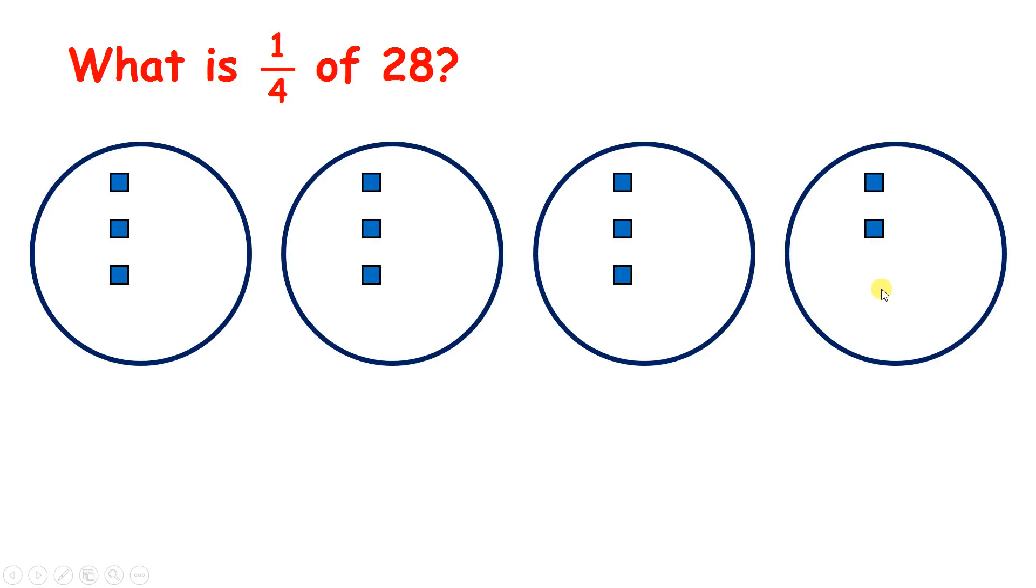Twelve, sixteen, twenty, twenty-four, and twenty-eight. So we have seven in each circle, so twenty-eight divided by four is seven.